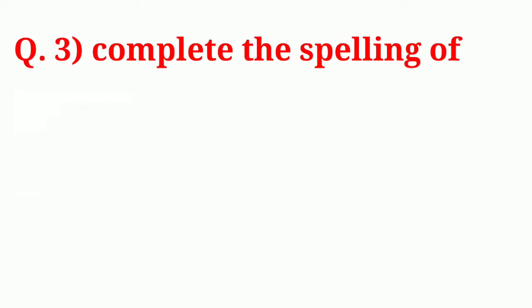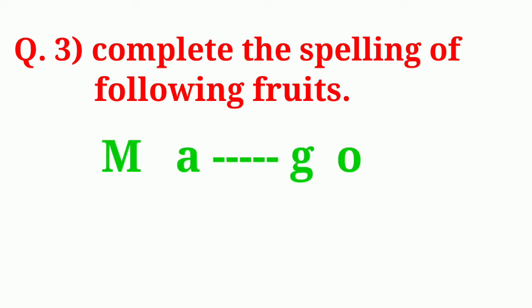Next question is, Complete the spelling of following fruits. Given spelling is, M, A, Dash, Dash, G, O. Options are, M, L, K, N.